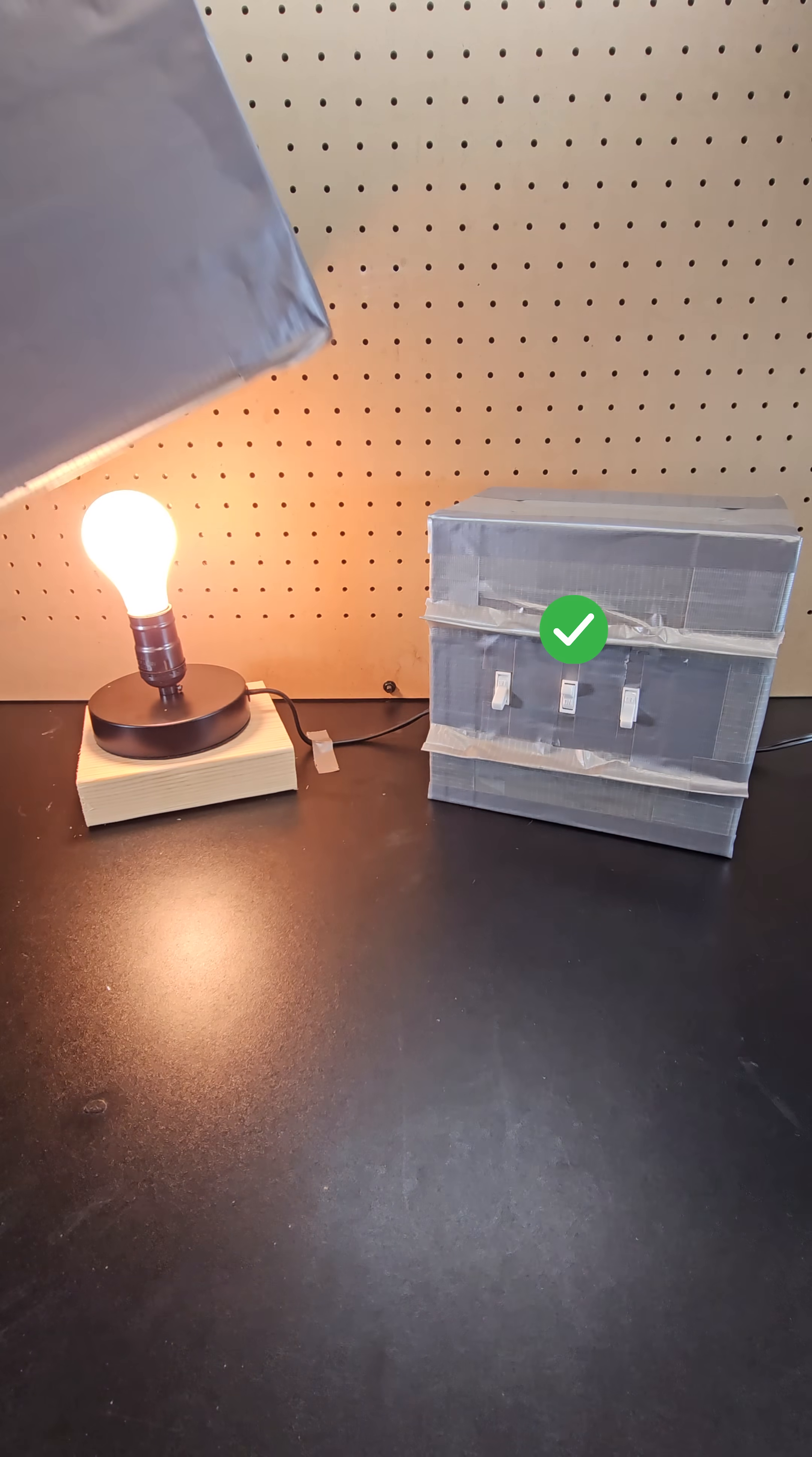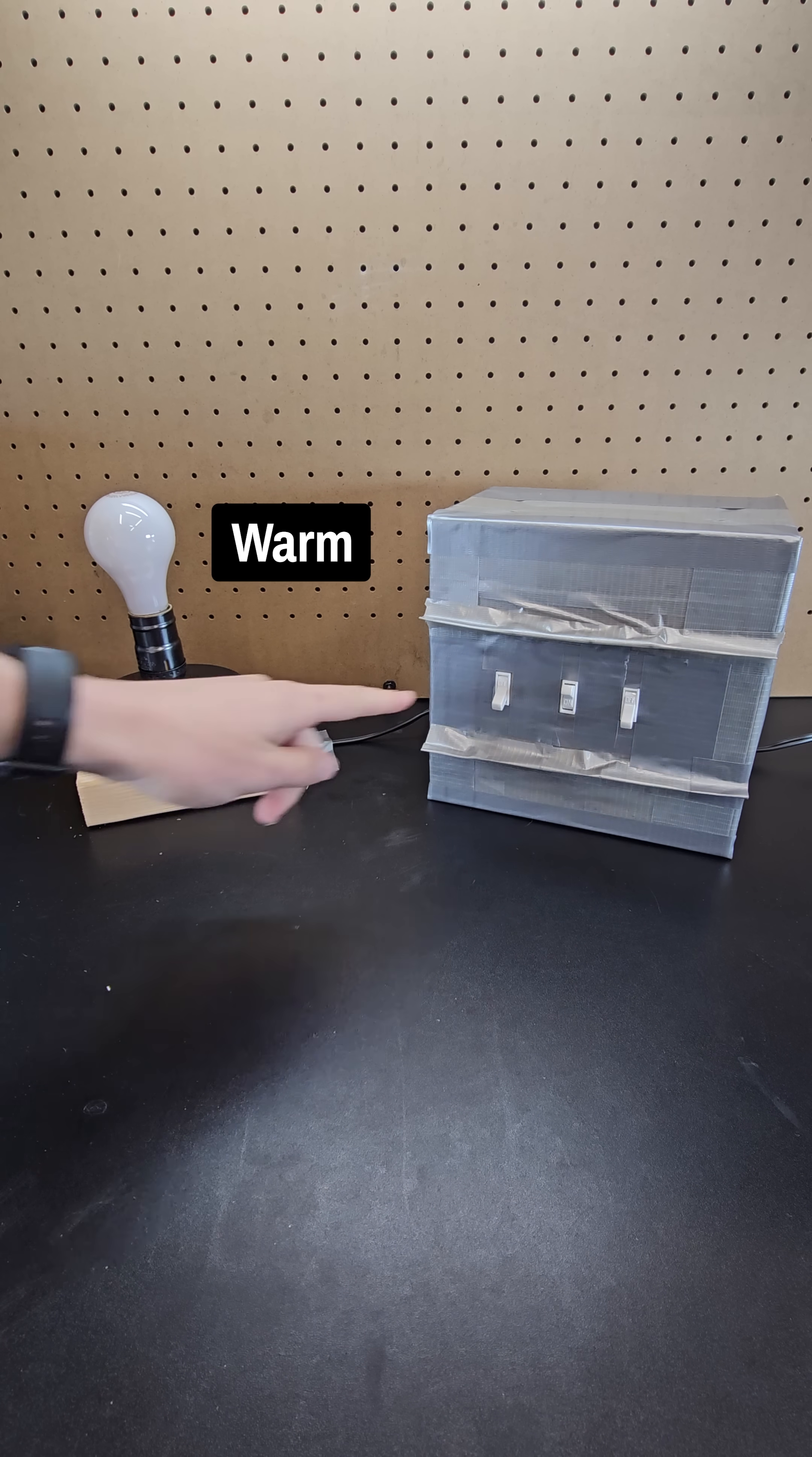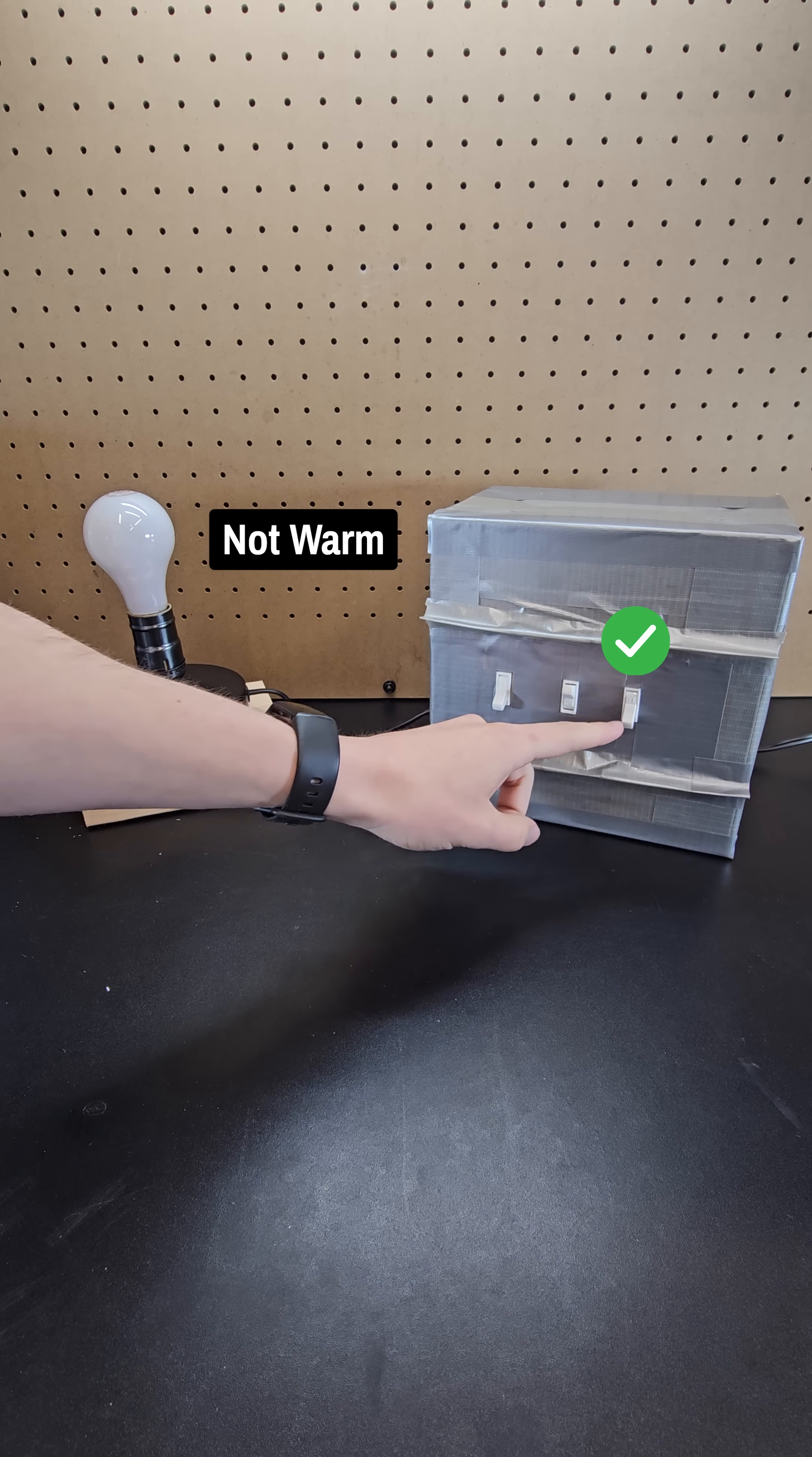If the light is on, you know the second light that you just switched controls it. If it's off but still warm, then you'd know the first light switch that you left on for five minutes is the one that controls it, and if it's off and cold, you'd know it's the third light switch that you didn't touch.